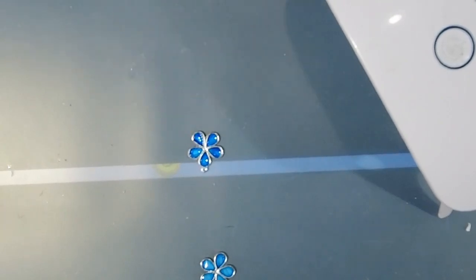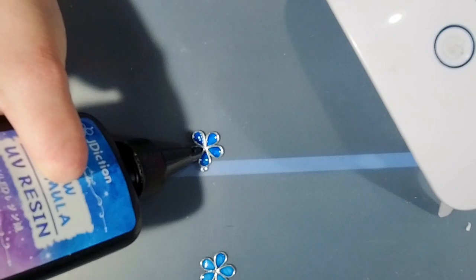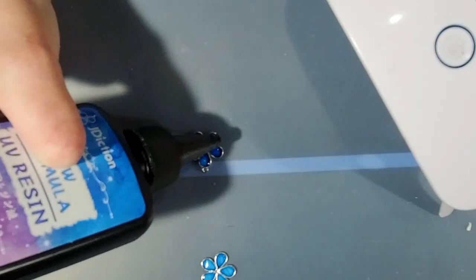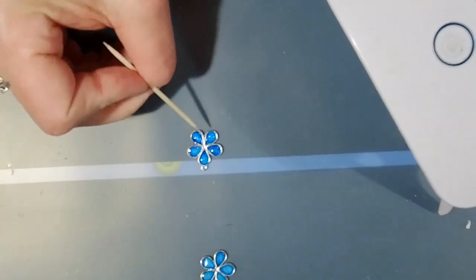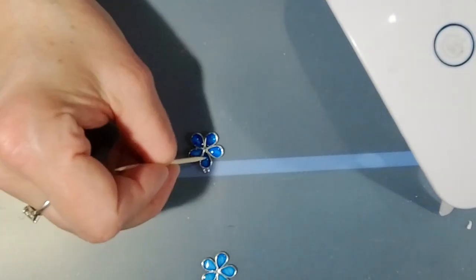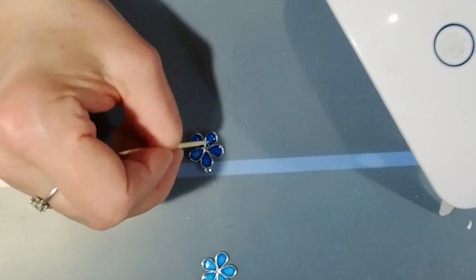Now I am just going to put a dab of clear UV resin on top. In each petal I'm going to use my handy dandy toothpick. And then I'm going to use the UV light. And this time I will do it for five minutes.